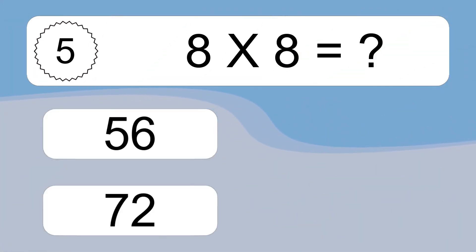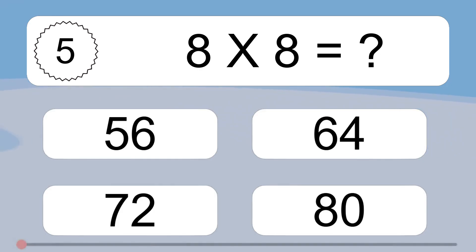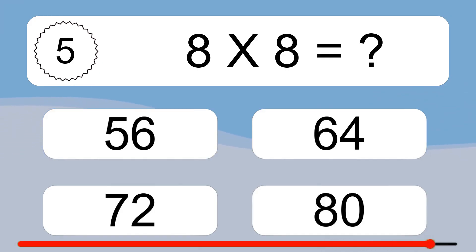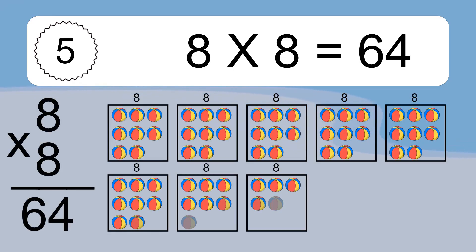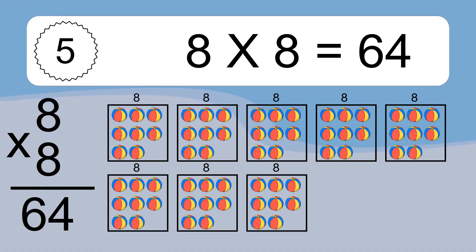8 times 8 equals what? 8 times 8 equals 64. We have 8 boxes, and each box has 8 colorful balls inside. If you count all the balls in all the boxes together, you will have 8 times 8 balls. This equals 64 balls.